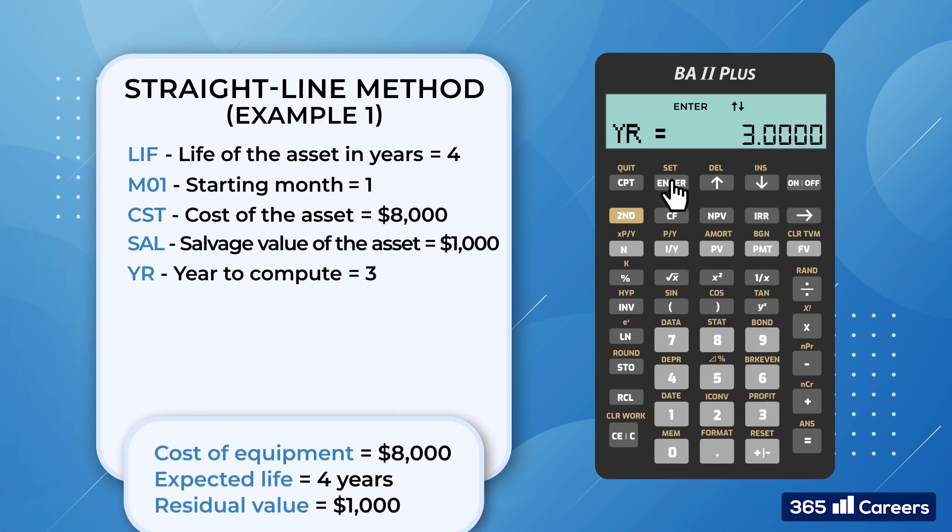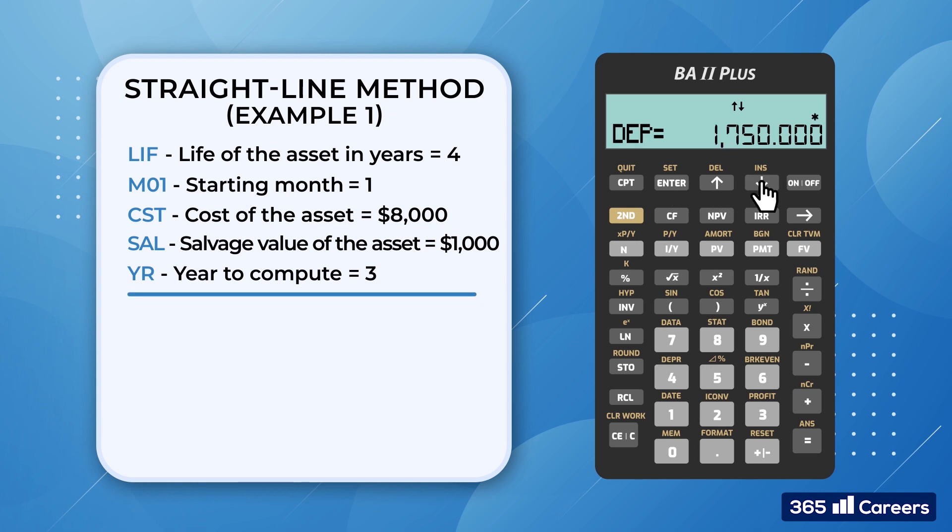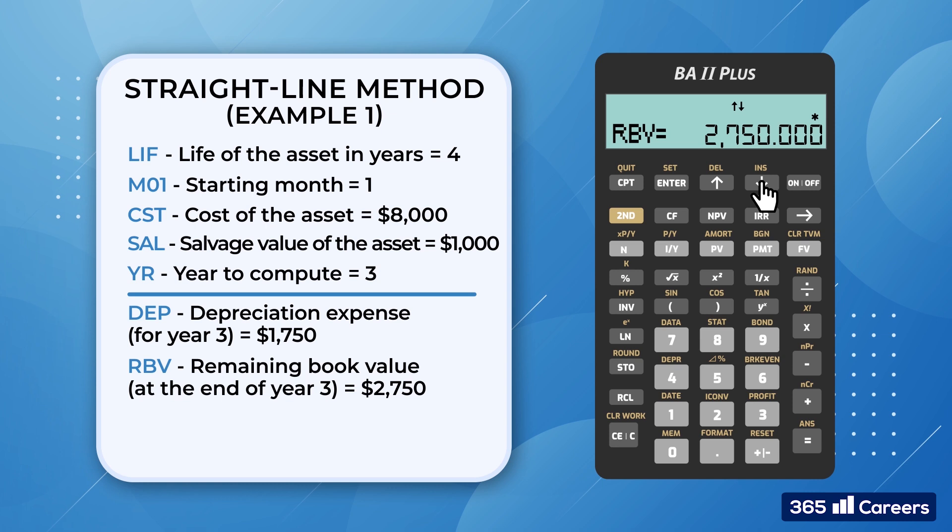I believe we are ready. Let's scroll down to examine the output we obtained. The annual depreciation is $1,750. Then we have RBV, which stands for remaining book value at the end of the year. This term indicates the net book value, which equals $2,750 for year 3. At the end, we have RDV, the remaining depreciable value, which is $1,750.